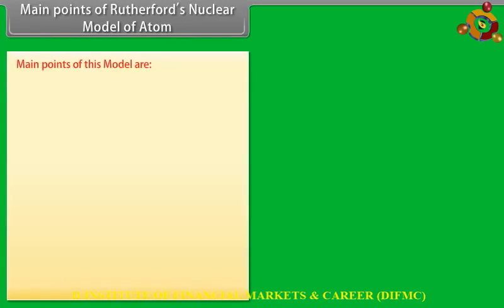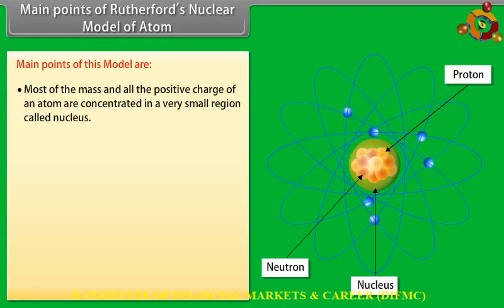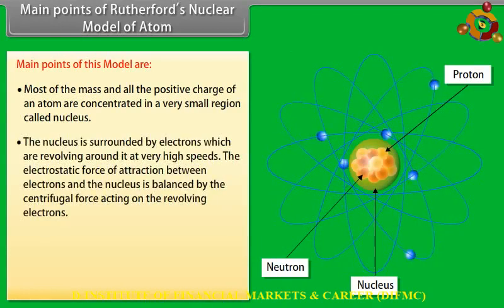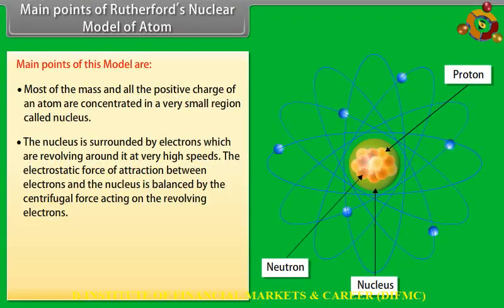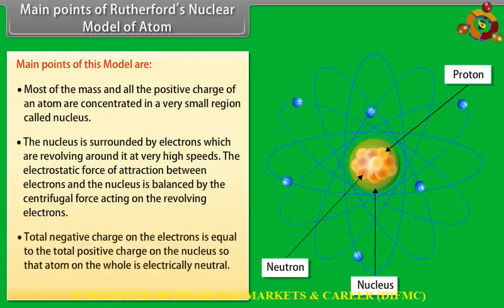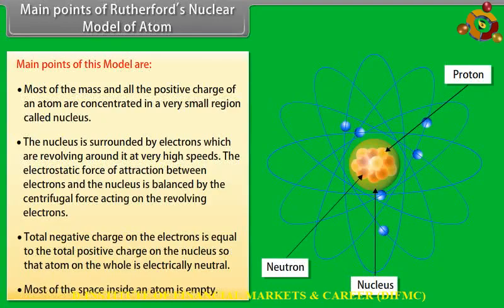Main points of Rutherford's nuclear model: (1) Most of the mass and all positive charge are concentrated in a very small region called the nucleus. (2) The nucleus is surrounded by electrons revolving around it at very high speeds; the electrostatic force of attraction is balanced by the centrifugal force on the revolving electrons. (3) Total negative charge on electrons equals total positive charge on the nucleus, so the atom is electrically neutral. (4) Most of the space inside an atom is empty.